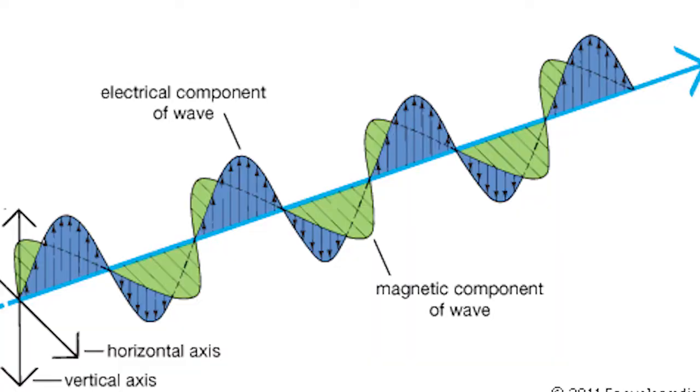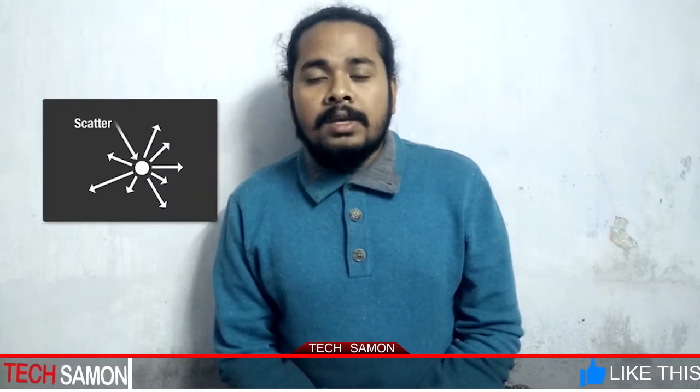First, I am going to talk about LCD. The light wave is a very large component, consisting of an electrical component and a magnetic component. These two components are at a 90-degree angle to each other. The light wave is scattered in all directions.